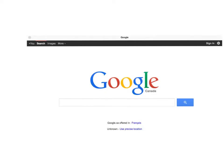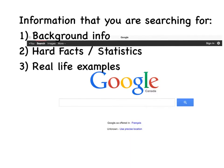In my opinion, one of the best search engines available is Google. You're going to want to do a Google search to find the information you're searching for. You're looking for background information for your intro, hard facts, statistics, years, or real-life examples to show what you're trying to say.